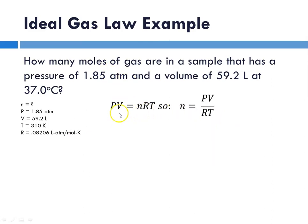Here's our gas law: PV equals nRT. I'm going to rearrange to solve for n, so I'm going to divide both sides by RT. So n is equal to PV over RT.